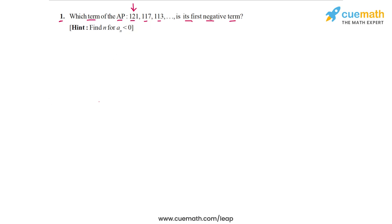We are also given a hint. The hint says that find n for which a_n is less than 0. So this is the approach we are going to follow. We will write an expression for a_n, the nth term, and then we will find that value of n for which a_n becomes less than 0 for the first time.